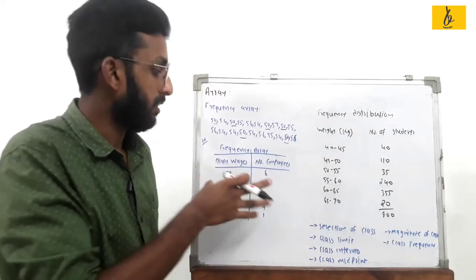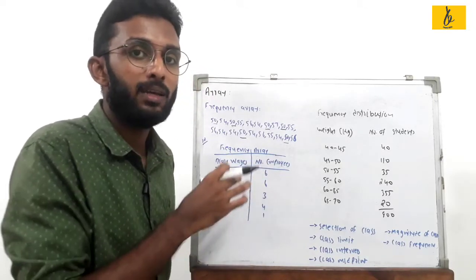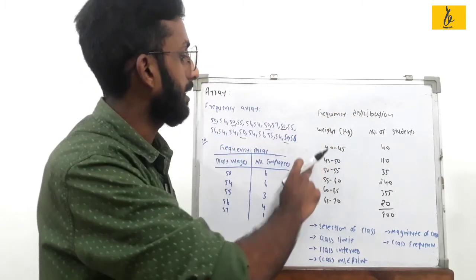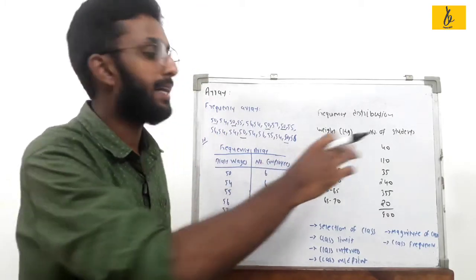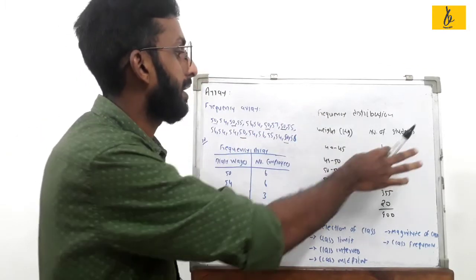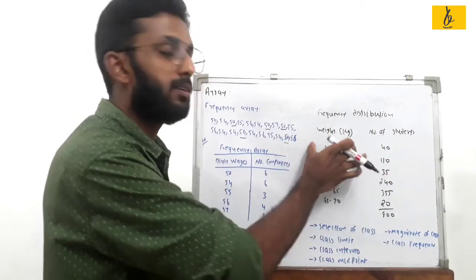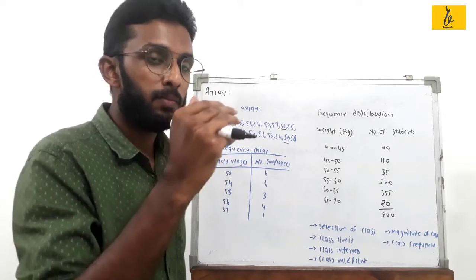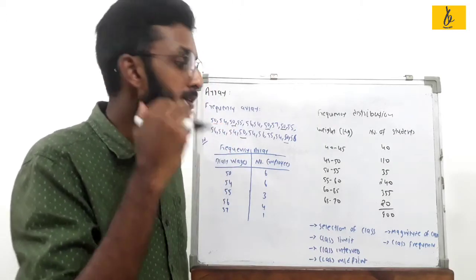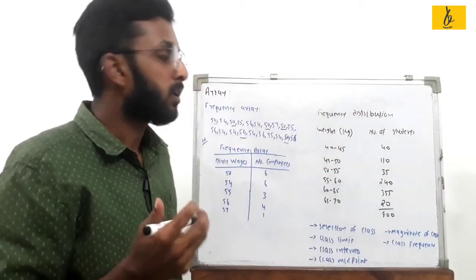Frequency Distribution is used when data is not exact or ideal — it does not have precise individual values. For example, when collecting students' weight data, we group them into classes: 40 to 45 kg, 45 to 50 kg, 50 to 55 kg. These class intervals form the Frequency Distribution.